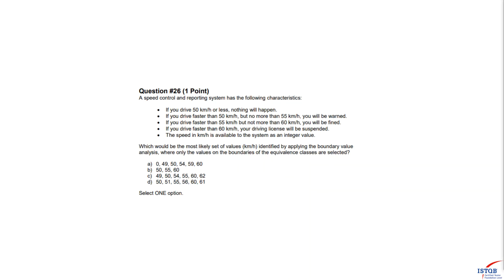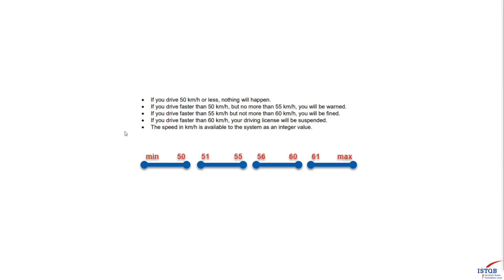The third question also involves boundary value analysis. Starting with equivalence partitioning: if you drive 50 km/h or less, 50 is included in the first partition. The second condition says 'faster than 50 km/h,' and since speed is available as an integer, the second class starts from 51. Applying the same principles to the remaining conditions, we define four classes: 50 or less, 51 to 55, 56 to 60, and 61 or higher.